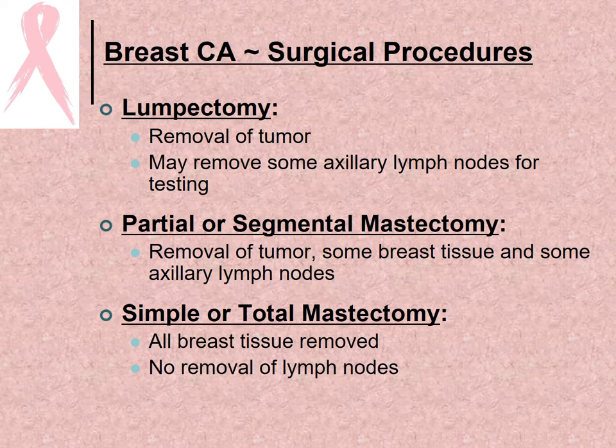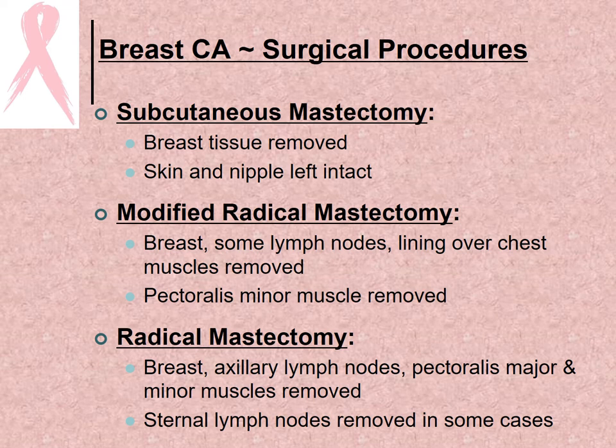Surgical options include: lumpectomy — removal of the tumor, with possible removal of some axillary lymph nodes; partial or segmental mastectomy — removal of the tumor, some breast tissue, and some axillary lymph nodes; simple or total mastectomy — all breast tissue removed but no lymph node removal; subcutaneous mastectomy — breast tissue removed but skin and nipple left intact; modified radical mastectomy — breast, some lymph nodes, and chest muscle lining removed along with the pectoralis minor muscle; and radical mastectomy — breast, axillary lymph nodes, and pectoralis major and minor muscles removed, with sternal lymph nodes sometimes removed as well.